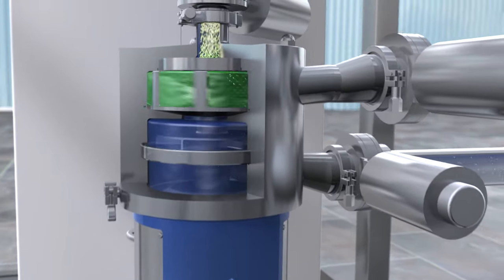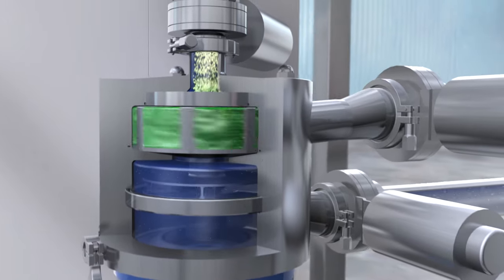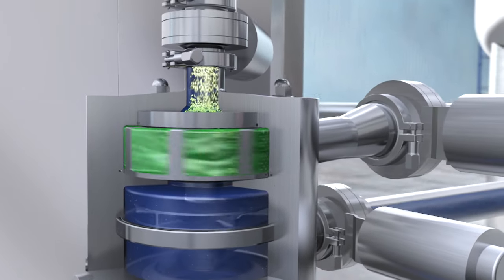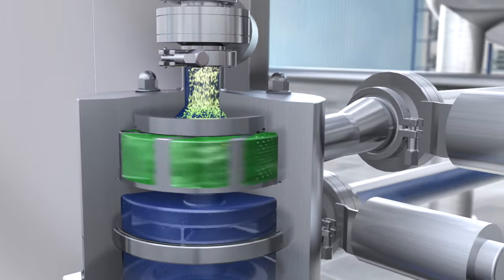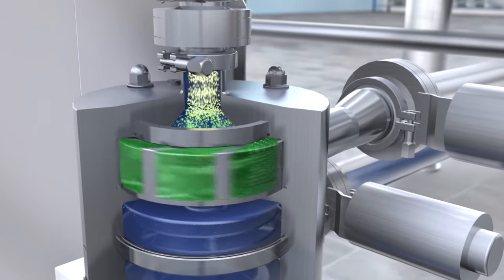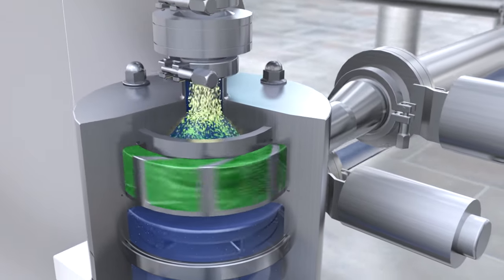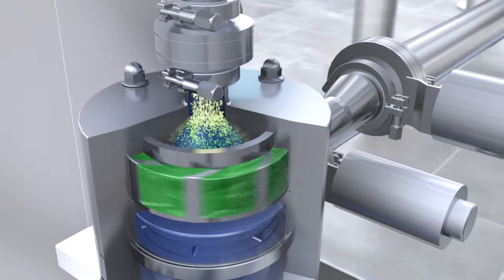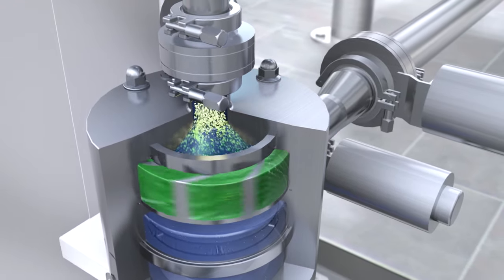The liquid enters the machine from the bottom. The pumping rotor conveys it to the dispersing stage and the solids are drawn from the hopper into the mixing chamber. In a few fractions of a second, the solids are mixed with the liquid phase and dispersed.